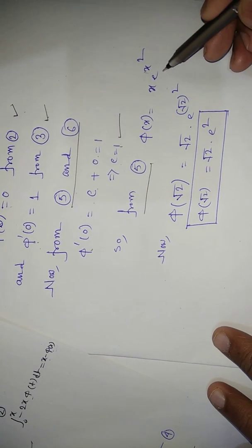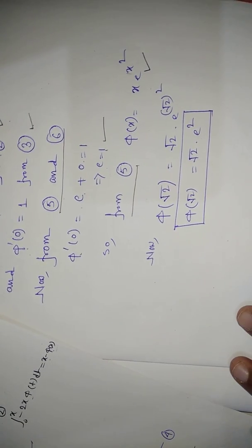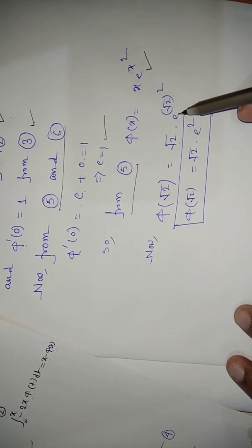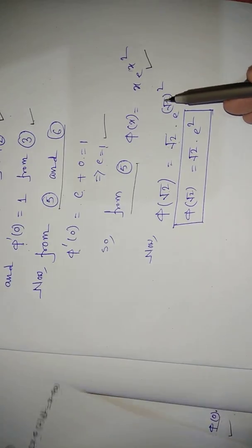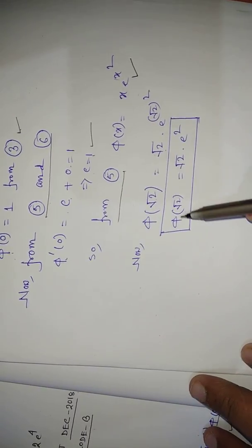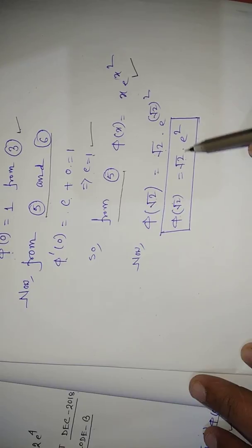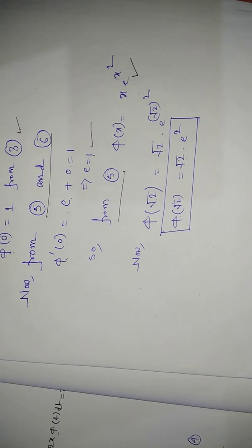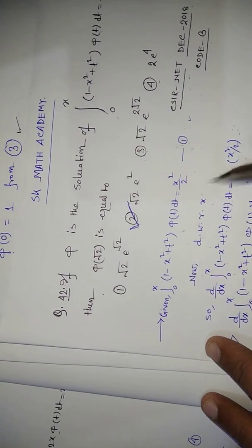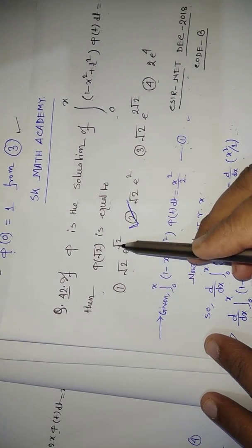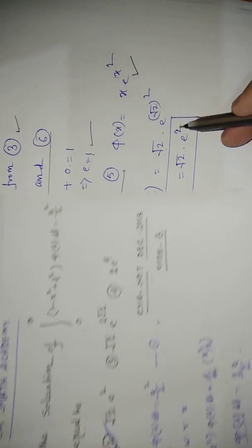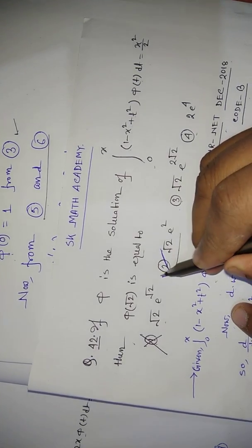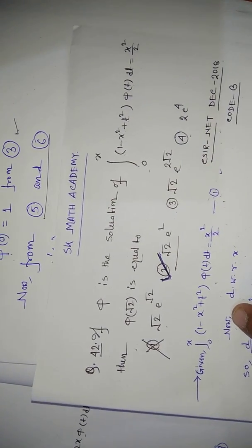Now φ(√2) = √2·e^((√2)²) = √2·e². So the answer is option 2: √2·e². Option 1 (√2·e^(√2)) is not correct. The right answer is option 2. Thank you, friends.